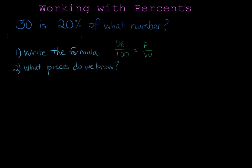We need to figure out what pieces we know. 30 is the part. 'Is' is a clue, generally, that the number, in this case preceding it, is the part. 20% is more obvious, that one is the percent. So we have the part and percent.